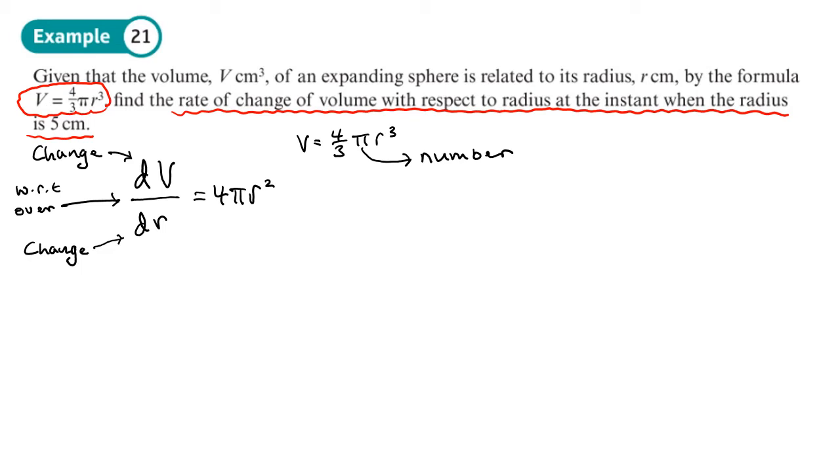So we've worked out what dV/dR is, and we need to work out the rate of change when R is 5. So all we need to do is substitute in R equal to 5, and we end up with 4 pi times by 5 squared. So that'd be 25 times by 4, 100 pi. So we can leave it like that, or we could actually multiply it out and give the answer to three significant figures.